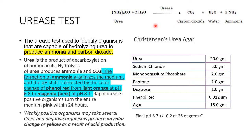Rapid urease-positive organisms turn the entire medium pink within 24 hours. Weakly positive organisms take several days, and negative organisms produce no color change, or you will see a bright yellow color as a result of acid production, since phenol red turns yellow under acidic pH.